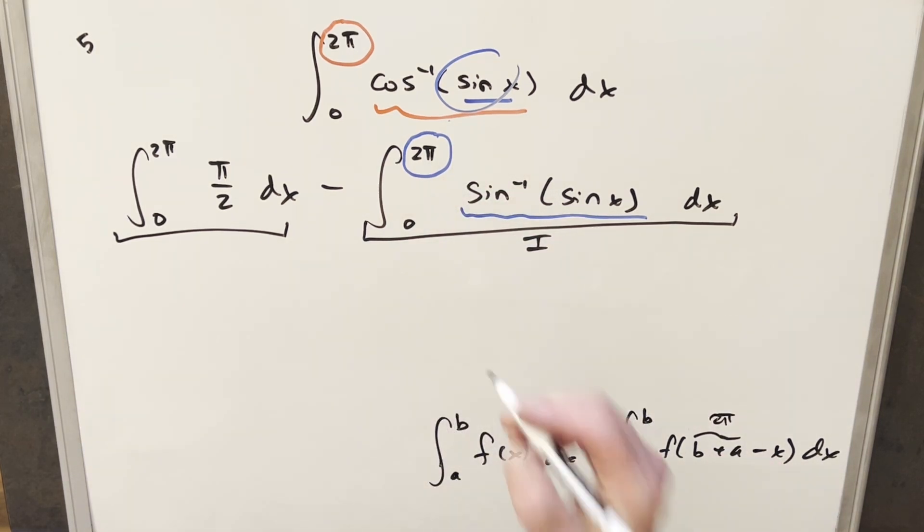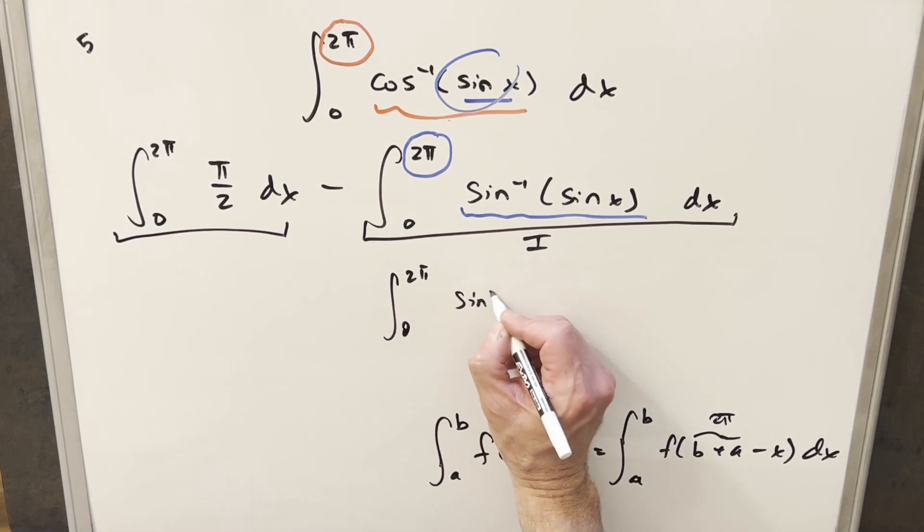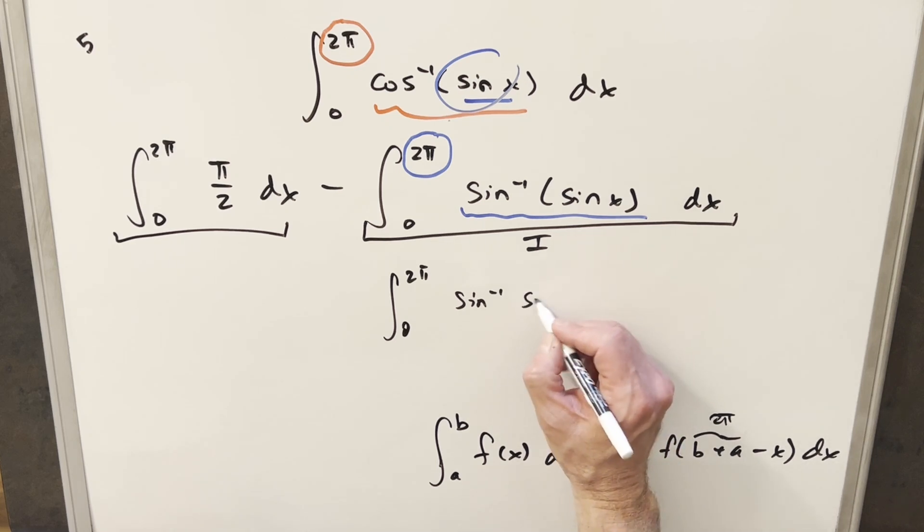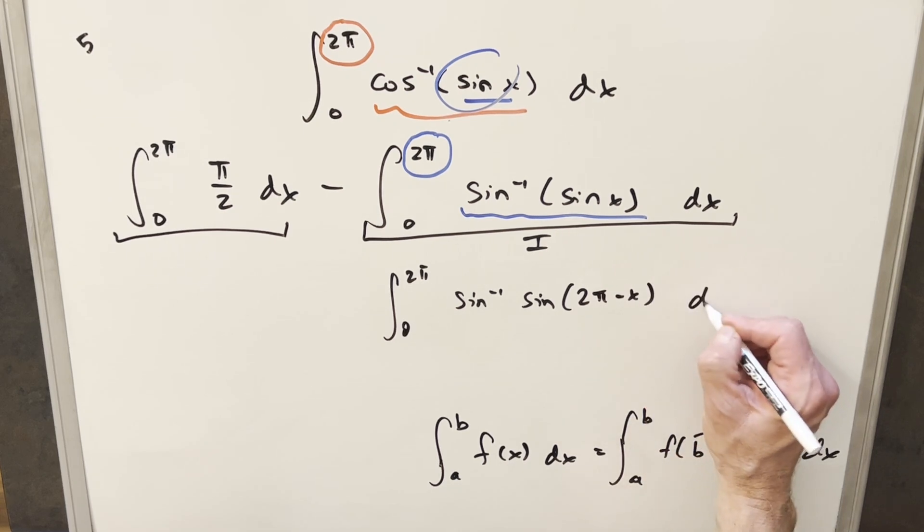So then we can just go ahead with this and what's going to happen is our bounds stay the same. They're still going from a to b. We'll have our arcsine. Now on the input on the sine, what's going to happen is now we have our two pi minus x. So let's just put that in right there. This is going to become two pi minus x dx.